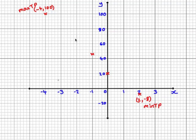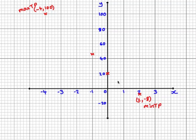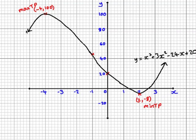Now we can sketch the graph including all key features. We plot the maximum turning point, the minimum turning point, the y-intercept, and the point of inflection. It's a cubic curve: up, down, changing concavity through the point of inflection, reaching the minimum turning point, then up again. The final curve looks like this. As always with any graph, don't forget to label it with the equation of the function.